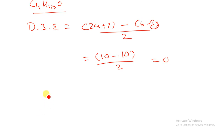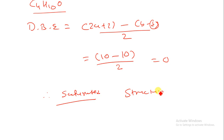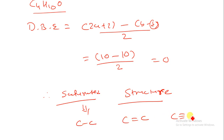If your DBE is 0, the compound should have a saturated structure — meaning all bonds in the compound are single bonds only. A compound with only one type of bond (single bond) is known as a saturated compound.